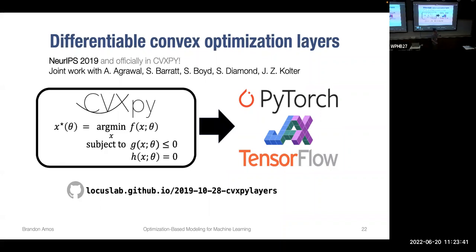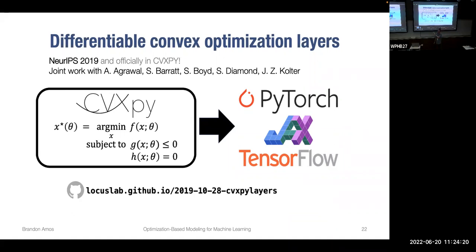CVXPy Layers made it possible to re-implement the OptNet QP in 10 lines of code, compared to the previous 1K lines of code, with similar or even slightly better computational performance due to sparse operations CVXPy handles. In OR and other optimization settings, it also provides the adjoint derivatives necessary for sensitivity or perturbation analysis of how your optimization problem's output changes as you change the parameters.